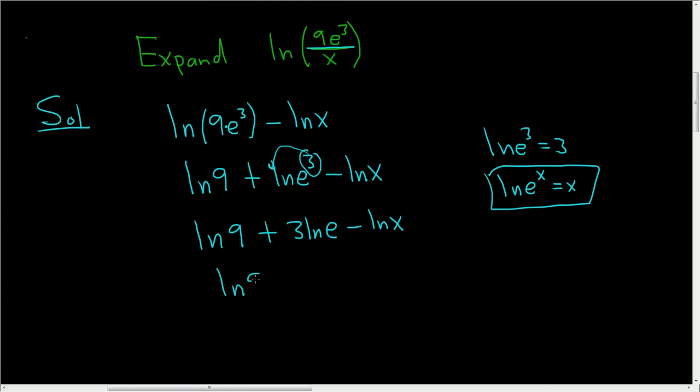So this is the natural log of 9 plus 3 times, and then the natural log of e is 1, and then minus the natural log of x. So the final answer is the natural log of 9 plus 3 minus the natural log of x. I hope this helps someone out there.